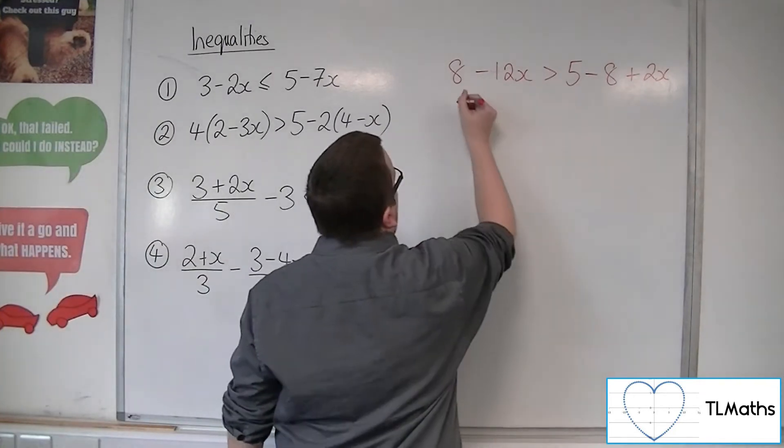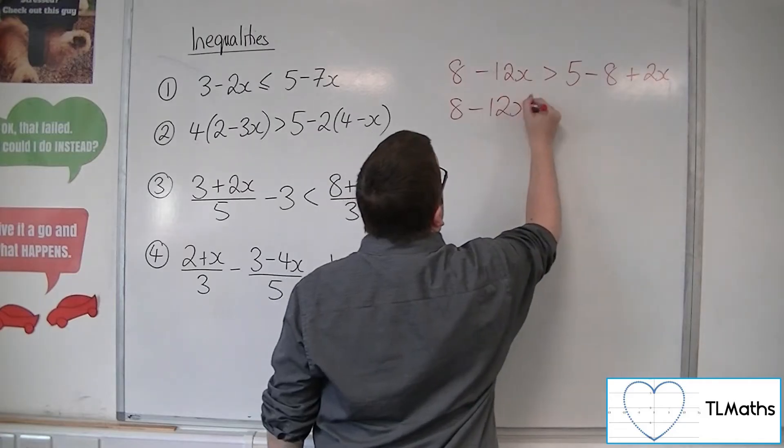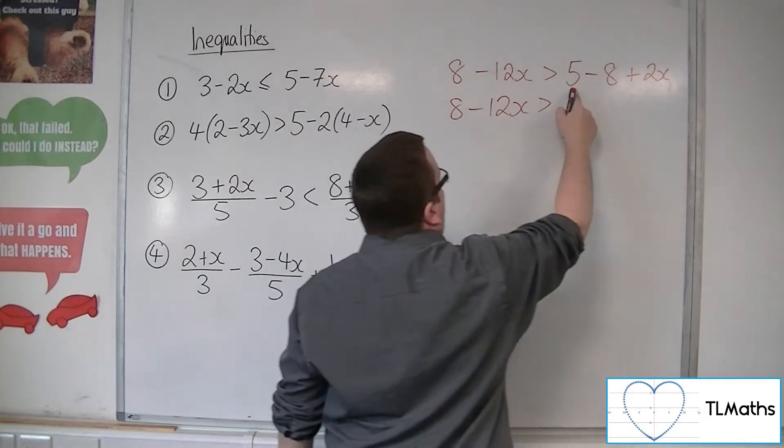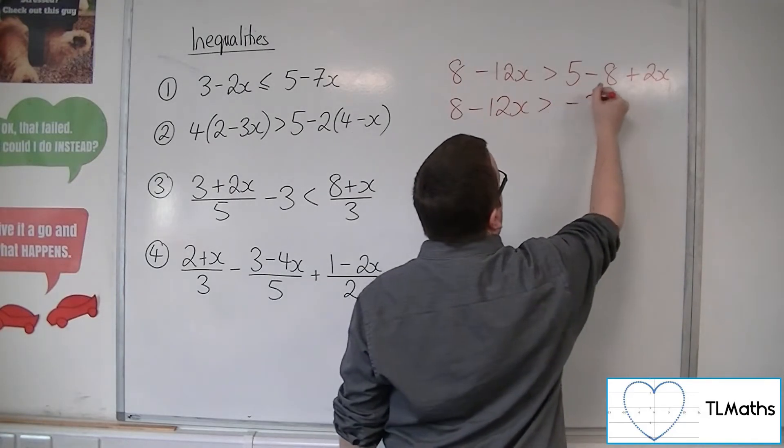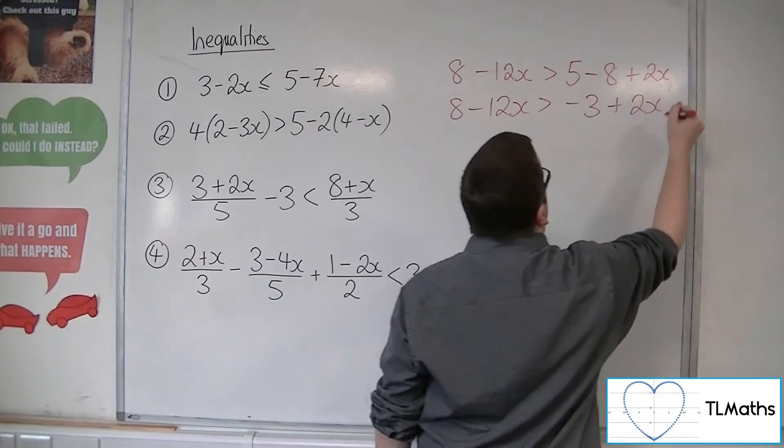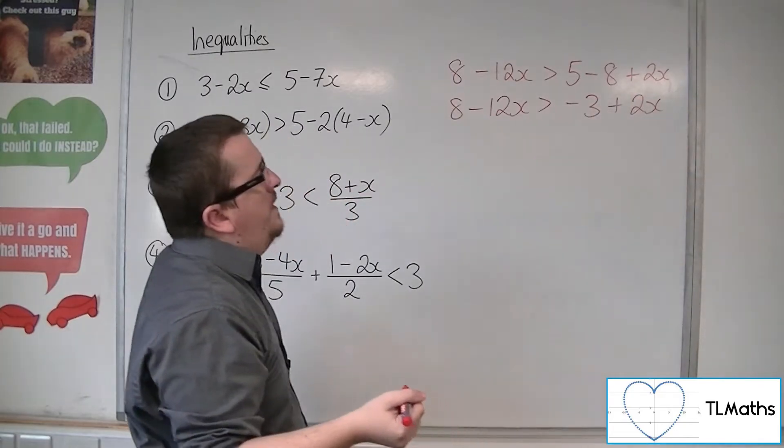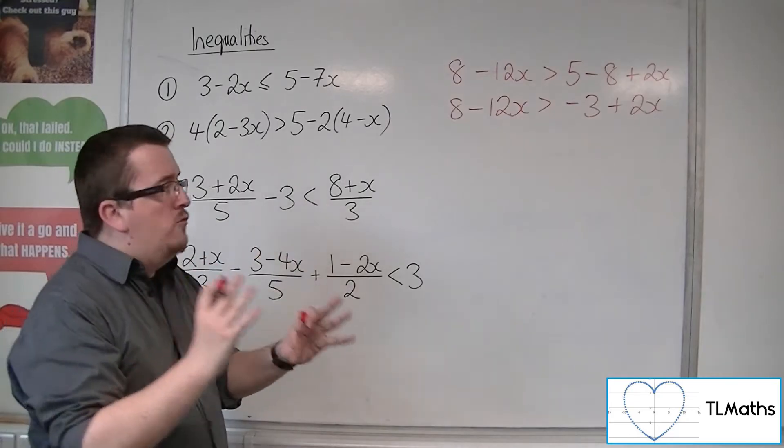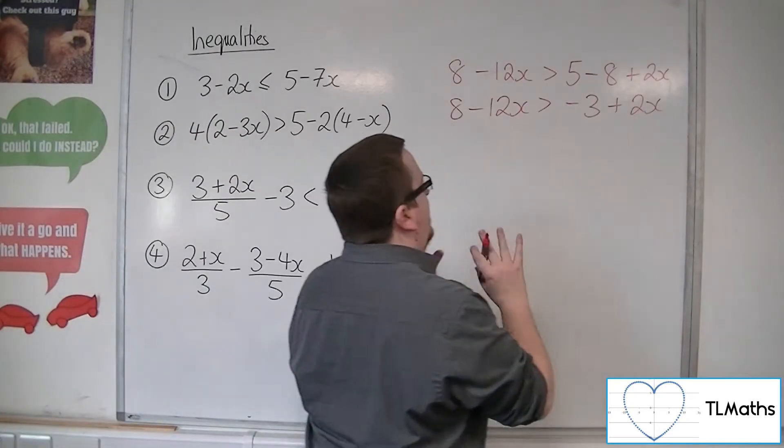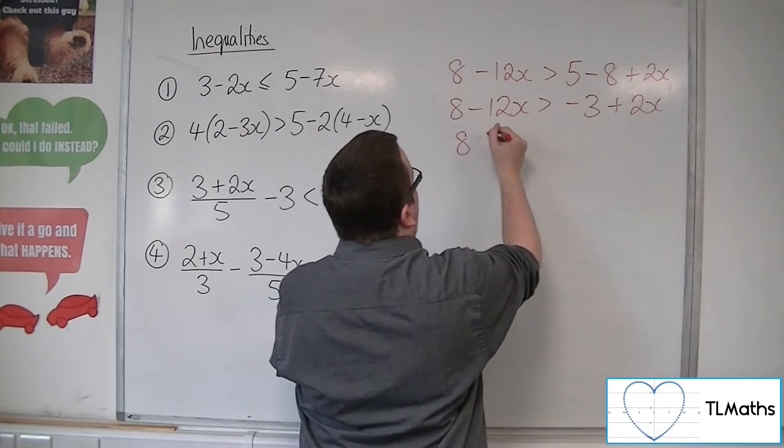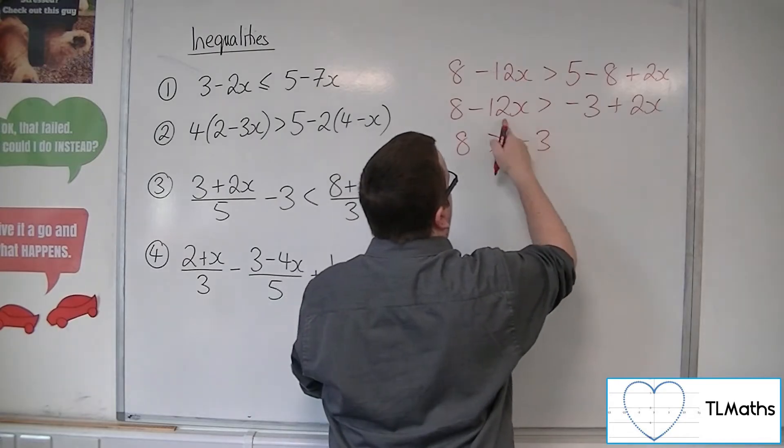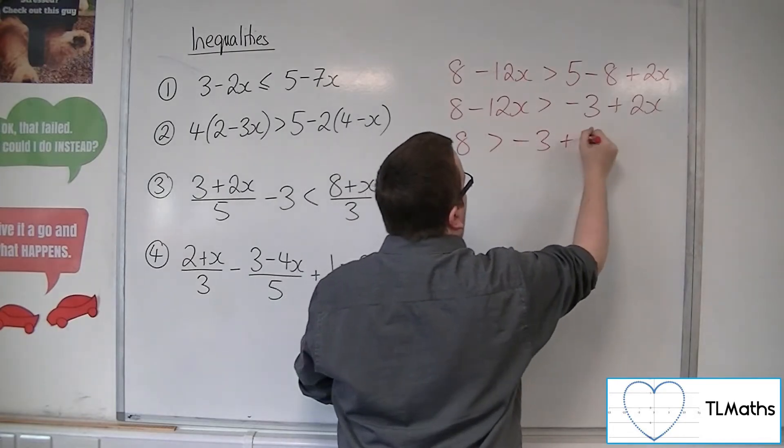Now, so let's tidy this up a little bit. The left hand side can stay as it is. We've got 5 take away 8, so minus 3. It's got the 2x there. Now I'm going to move the x's onto the right hand side of the inequality to make them all positive. So we've got 8 is greater than minus 3. 12x plus 2x is 14x.